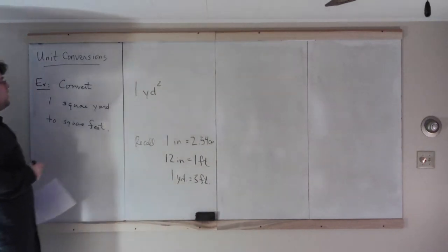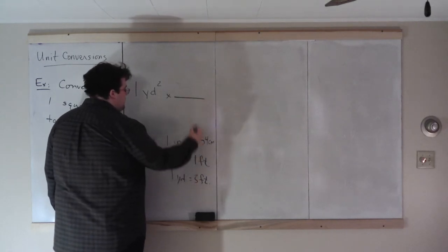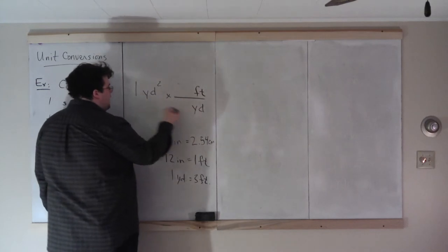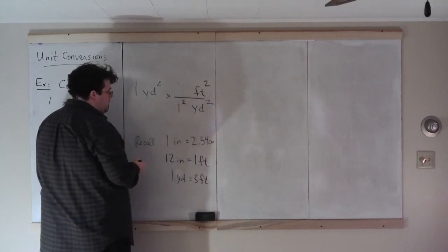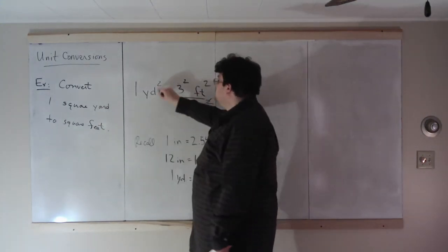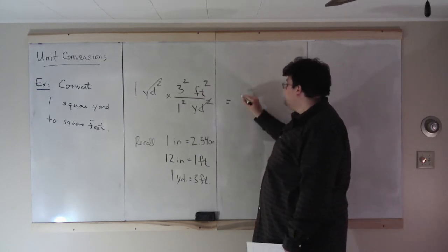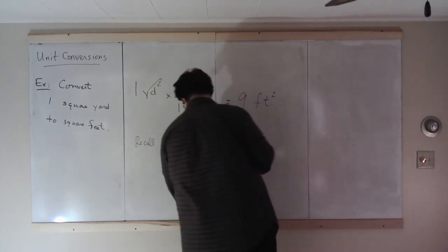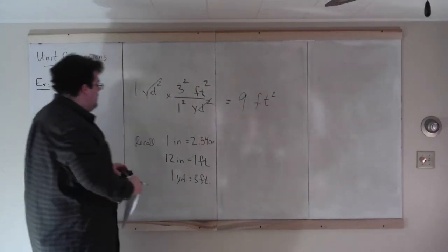We start with one square yard and convert to square feet. We have a conversion between yards and feet — one yard equals three feet — but we need to cancel out yards squared. So we square everything: one squared over yards squared on one side, three squared feet squared on the other. Yards cancel. We're left with one times three squared, which is nine. So there are nine square feet in a square yard — a third way you could have concluded that.